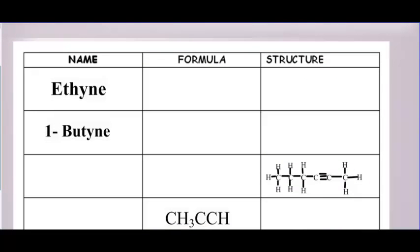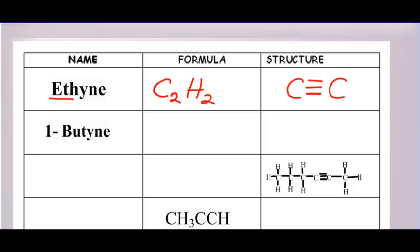Number one is ethyne. 'Eth' — if you go to Table P, it means two carbons. To get the formula, we double two and then subtract two. Double two gives four, take away two: C2H2. Draw your structure with two carbons — there's only one place the triple bond can be, between those two carbons. Fill in so that every carbon has four bonds around it. There is your structure for ethyne.